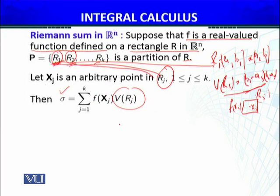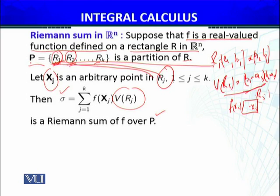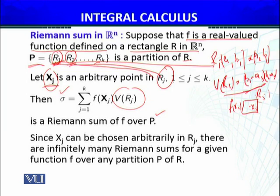Sub volumes, I'm summing up, this is called Riemann sum of f over the partitioning P. Now one thing to notice, for a partitioning P, how many possibilities are there that X_j is in R_j? There are infinitely many possibilities.